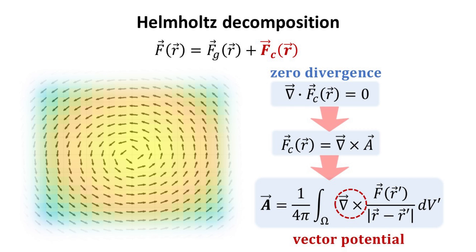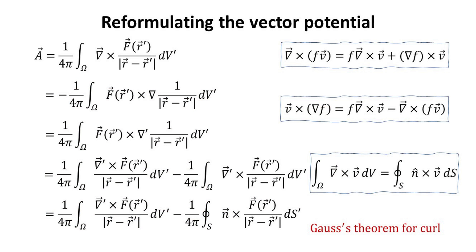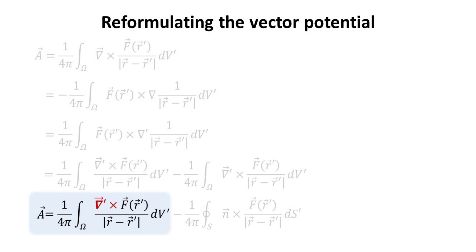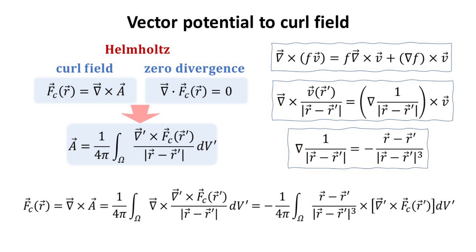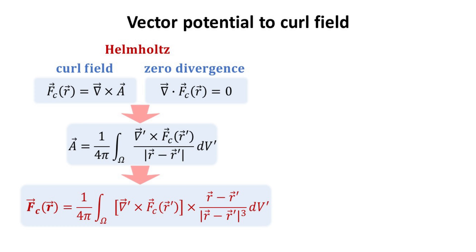Starting from where we left off on curl fields, our next task is to rewrite the formula for the vector potential such that the curl is in R' instead of R, just as we did for the electric field case. This can be done with the help of some vector calculus identities, as shown. We indeed managed to get an expression for the vector potential where the curl is in R' instead of R; however, it incurs an additional surface integral term. But if the field is well-behaved and if we take the integration volume over all space, the surface term should diminish. To get the expression for the curl field, we just need to take the curl of the vector potential A, and with the help of the identity as highlighted, we arrive at the final expression for the curl field.